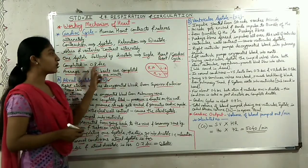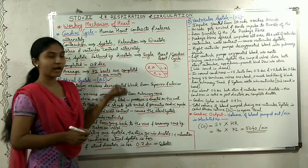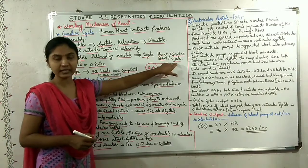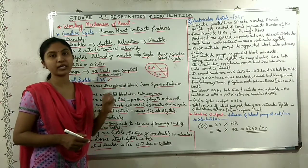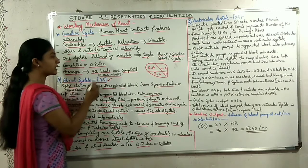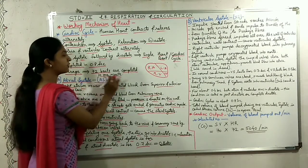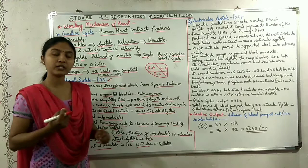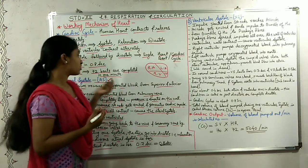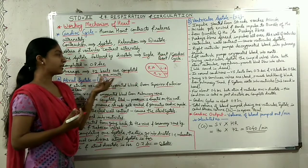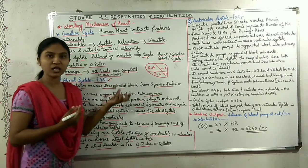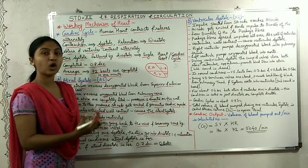The cardiac cycle is completed in 0.8 seconds. The average number of heartbeats is 72 beats per minute in a normal adult.